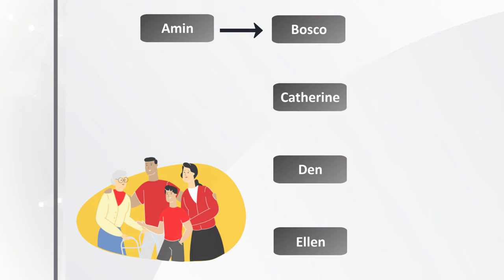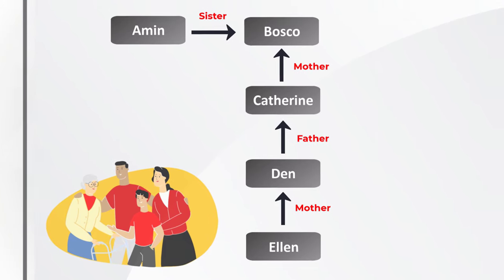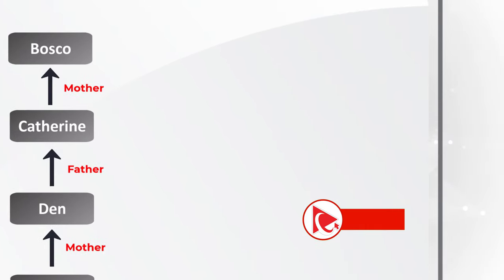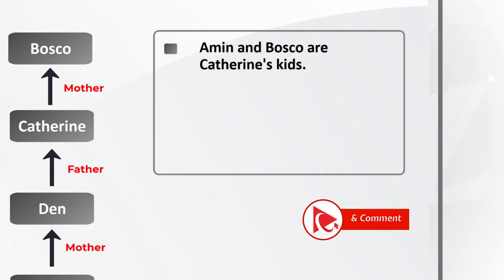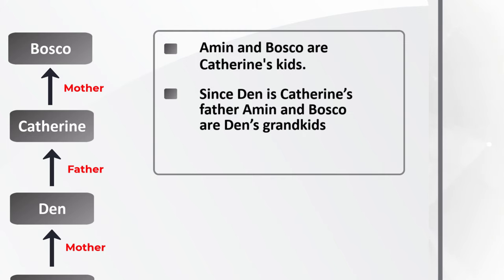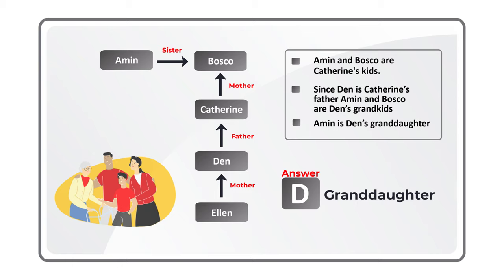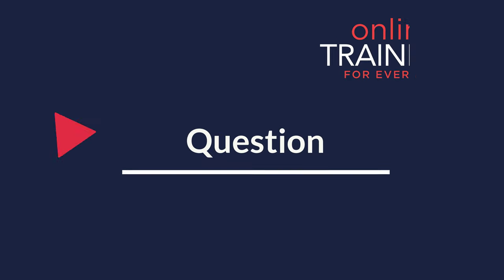Building the diagram step by step: Amin is Baska's sister, Catherine is Baska's mother, Dan is Catherine's father, and Alan is Dan's mother. Amin and Baska are Catherine's children; since Dan is Catherine's father, Amin and Baska are Dan's grandkids, which means Amin is Dan's granddaughter. The correct choice is D: granddaughter.